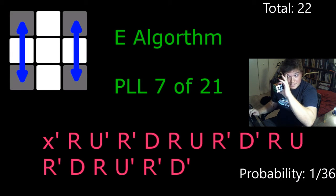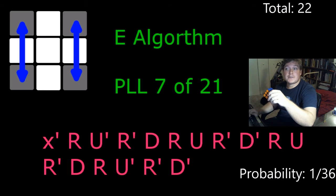E algorithm can only happen in two different ways. The arrows can be horizontal or vertical, but you rotate the cube to always make them vertical. But there's only two ways that could happen. This way or this way. So that's one 36th probability, 22 total cases.